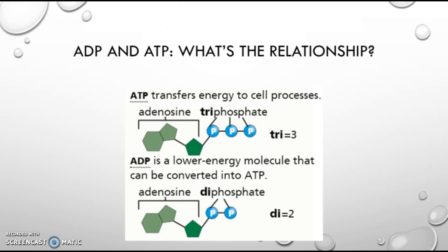The first thing I wanted to touch base on was ATP and ADP. As we can see on the screen right here, ATP has three phosphates or is a triphosphate. ADP has two phosphates, it is a diphosphate.